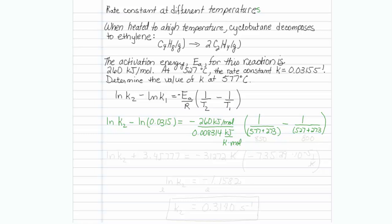Now it's just a calculator fest. Let's start with natural log of 0.0315 — that is a minus, so natural log of k2 is going to be added to 3.45777, and that is equal to negative 260 divided by 0.008314, which gives negative 31272 — in units of kelvin, since kilojoules and moles cancel. Then 577 plus 273 gives 850, and 527 plus 273 gives 800.